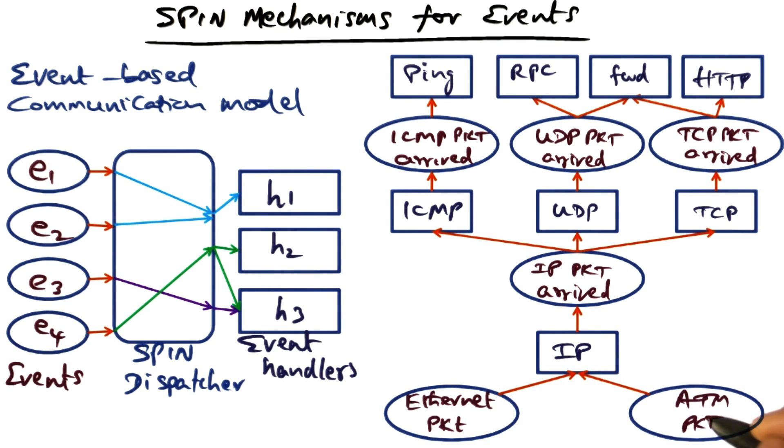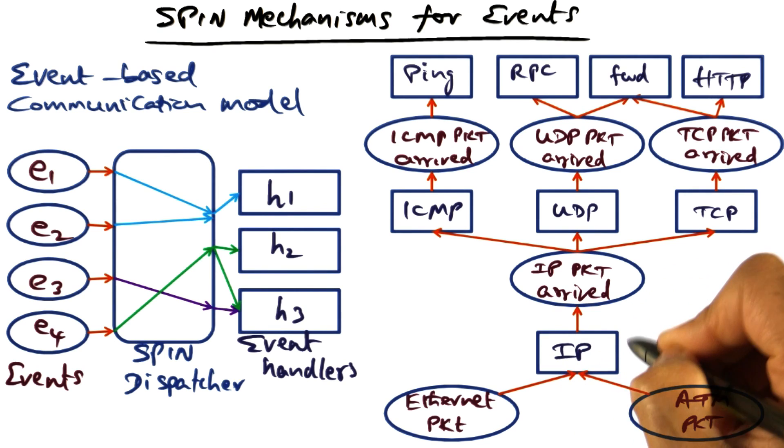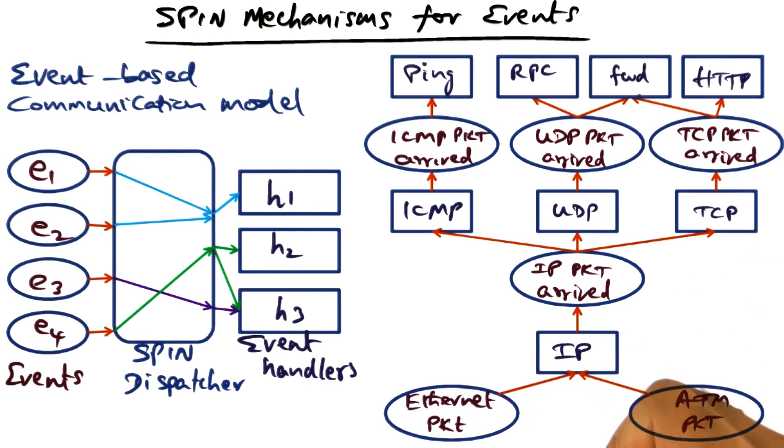Ethernet packet arrival is an event, ATM packet arrival is an event—different events, but they map to the same handler, which is the IP handler. That's an example of many-to-one mapping.